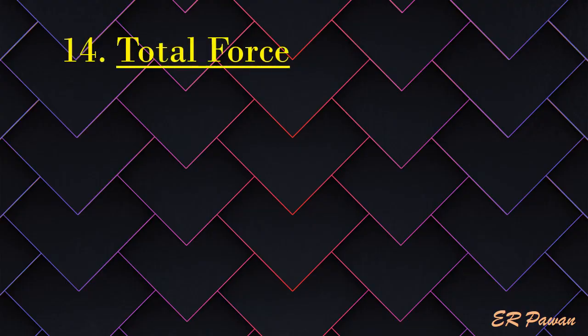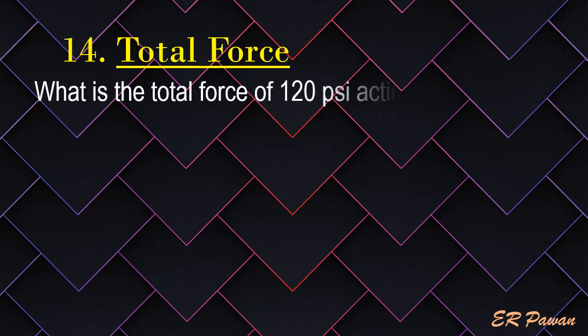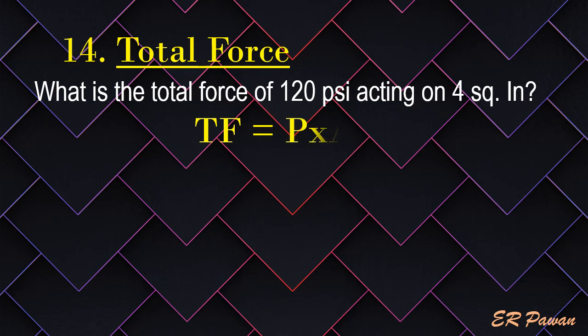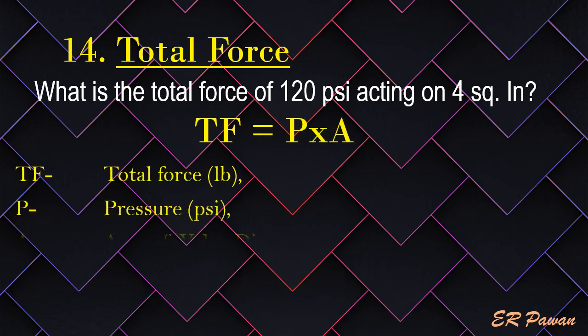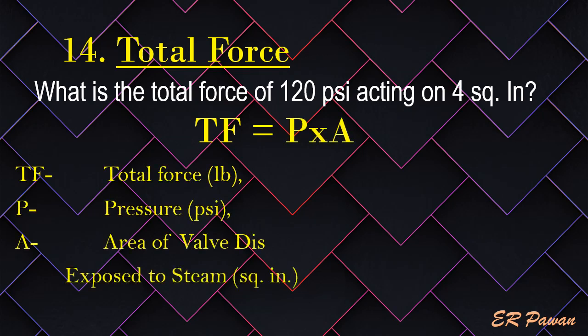Formula 14 — Total Force. What is the total force of 120 pounds per square inch acting on 4 square inches? Total force equals pressure multiplied by area. Let's put the value in the formula.